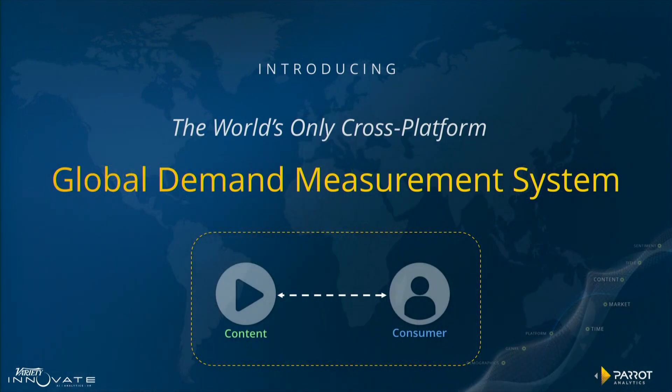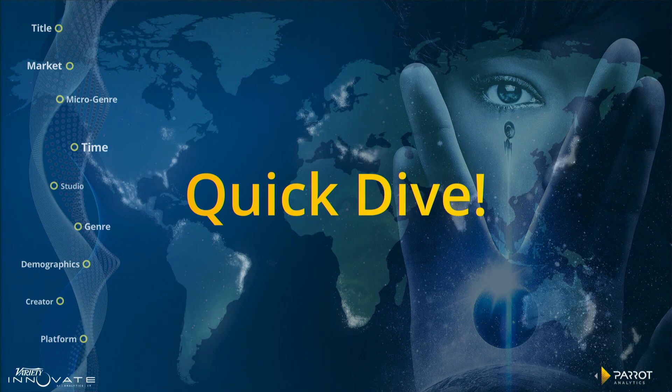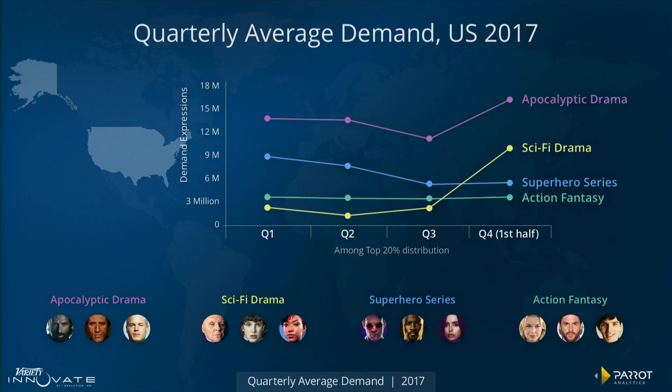A system that allows us to quantify that relationship between consumers and content. So let's do a quick dive. This is the demand for the top four drama genres for TV shows in the US over the past four quarters this year. We can see that sci-fi and apocalyptic dramas have taken a spike in Q4, and superhero series demand by US consumers has actually been steadily declining throughout the start of the year.